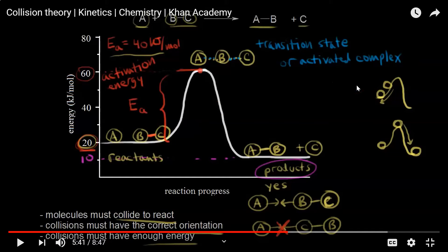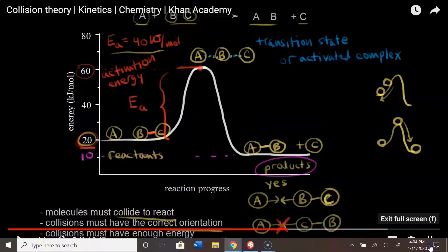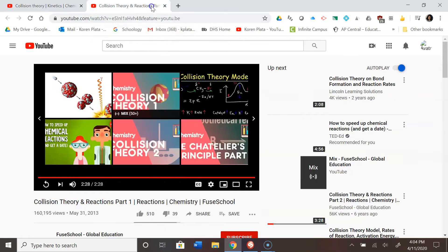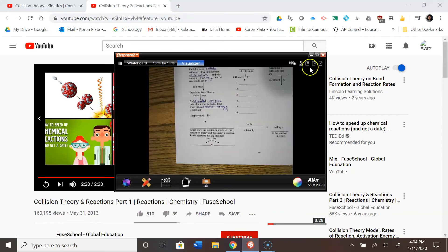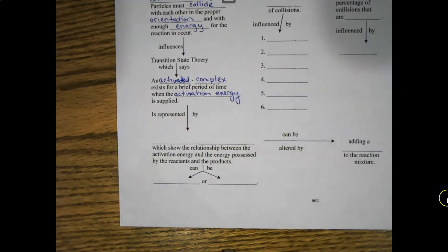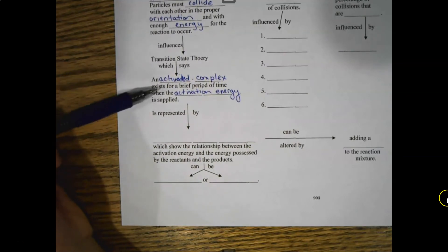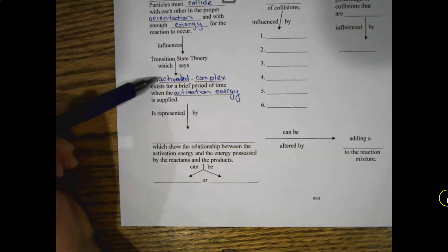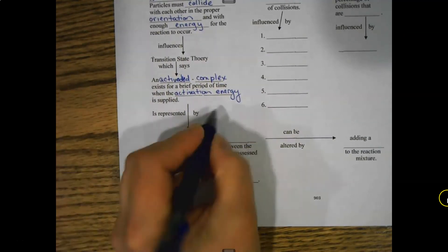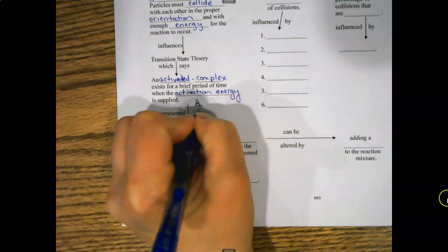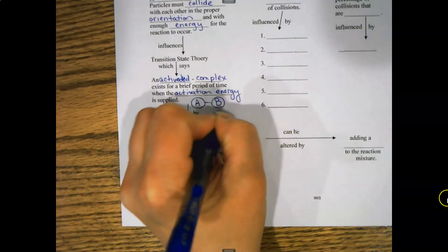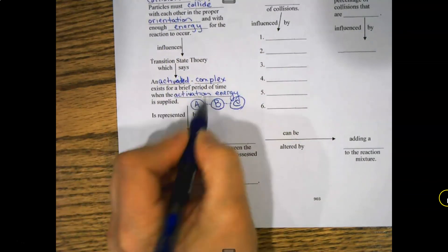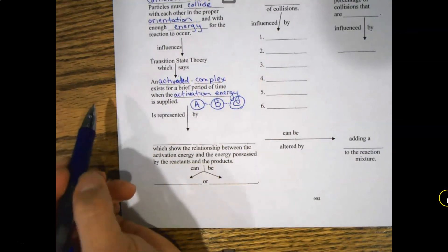We're going to pause there — he's going to go into a lot more detail about the diagrams, but I don't want us to get to that quite yet. We're going to go back to our organizer and continue. You saw that the activated complex had a lot of energy — remember the diagram showed it kind of bonded to B and kind of bonded to C, so it's a structure that's really not supposed to be stable.